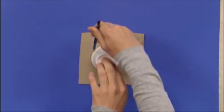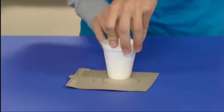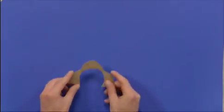To make the hair, I traced the styrofoam cup on a piece of cardstock. Then I traced three half circles and cut it out. This is the outline of the hair.